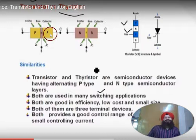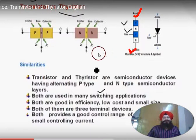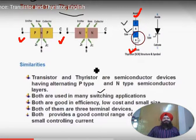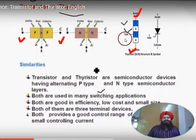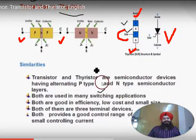The SCR has four layers: PNPN. The first terminal is called anode and the last is called cathode — like in a transistor where emitter emits and collector collects, current flows from anode to cathode. Similarly, like the base controls current in a transistor, here the gate controls the current flowing from anode to cathode.